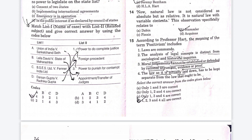After solving this paper, you will understand what types of questions are asked. The next match-the-following question: Union of India versus Sankal Chand relates to appointment and transfer of judges. Lila David versus State of Maharashtra relates to power to punish for contempt. B.S.E.S. Limited versus Federal India relates to foreign presidency. Darshan Gupta versus Radhiga Gupta relates to power to do complete justice.